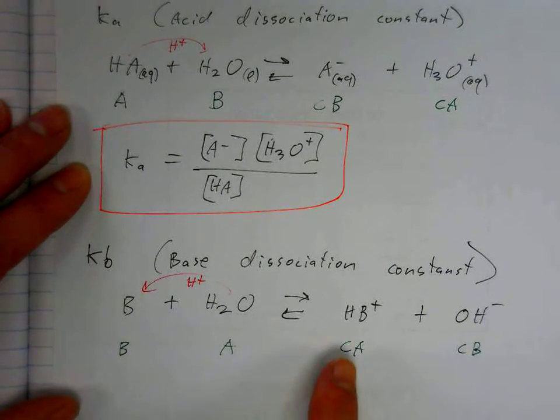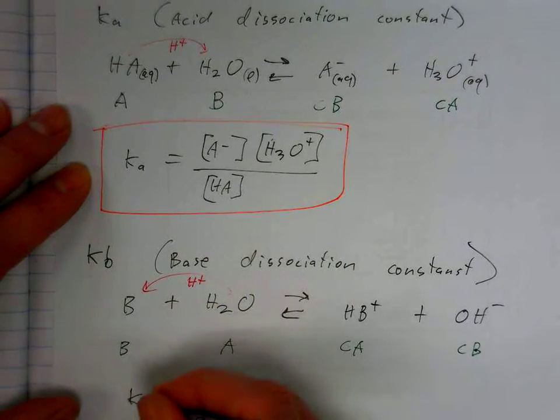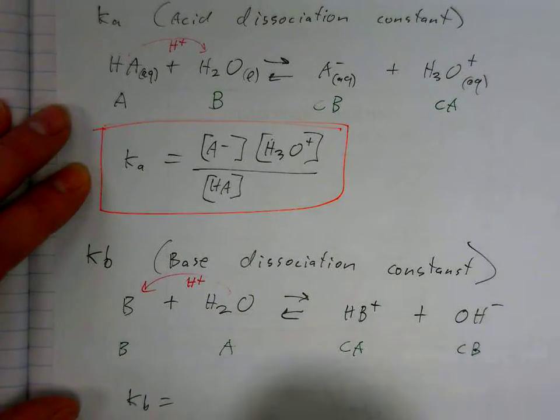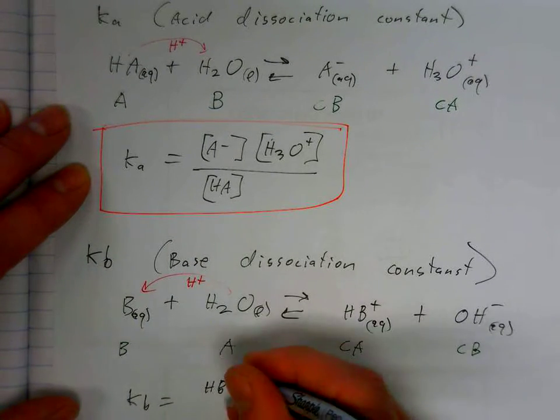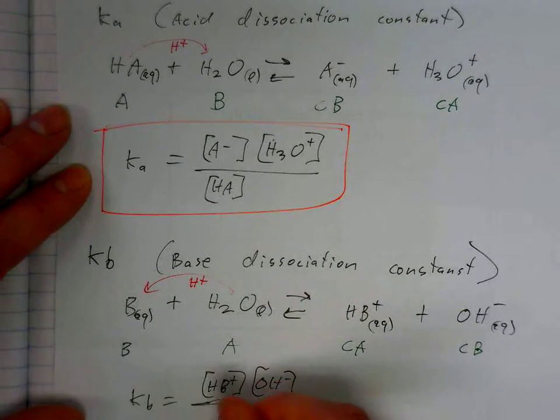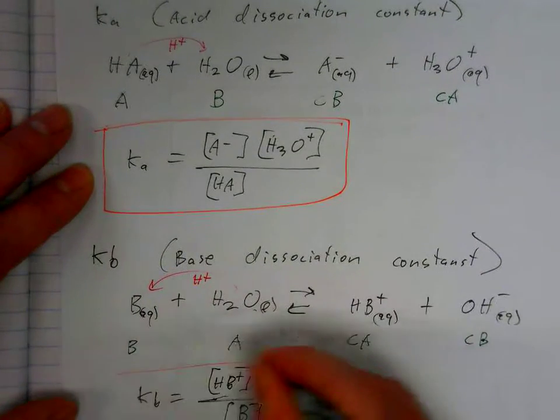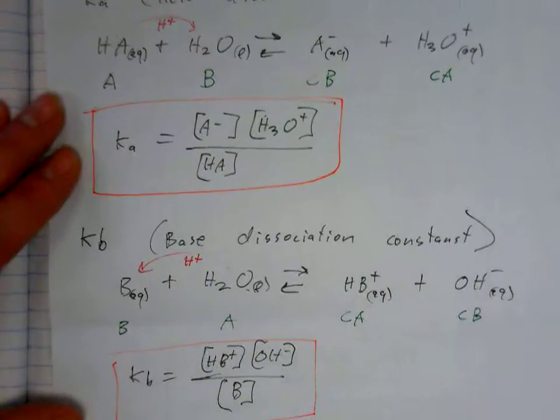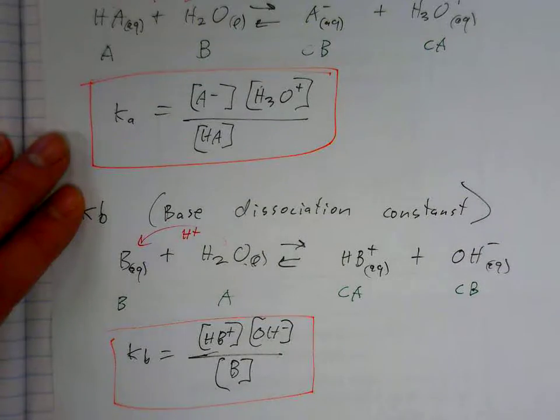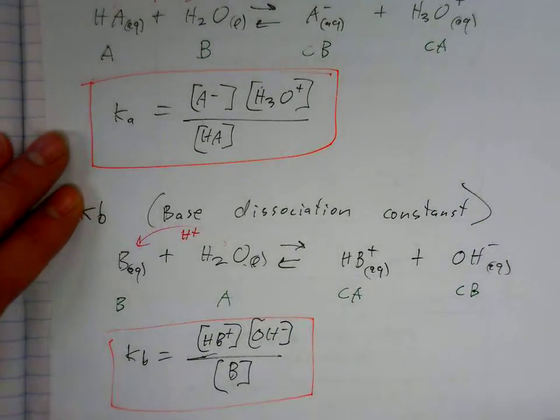Now, HB plus and OH minus then. So when we write the Kb aqueous, we don't include the water. Okay, so we're going to apply this now to several problems.